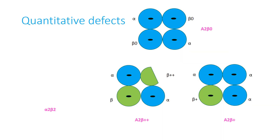Hemoglobinopathies or diseases of hemoglobin can be quantitative defects related to the number of globin chains, or qualitative defects related to the quality of a globin chain. Here I shall be talking about beta thalassemia, which is the most common type of thalassemia seen in India.